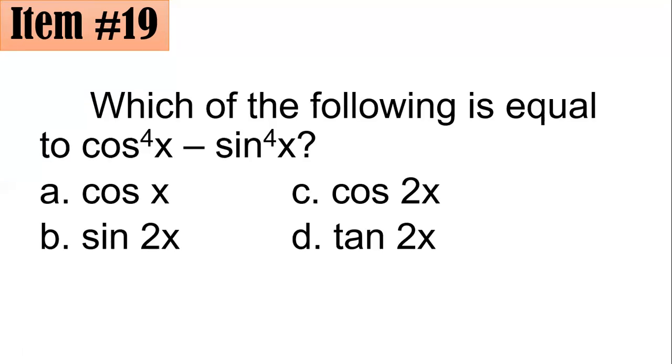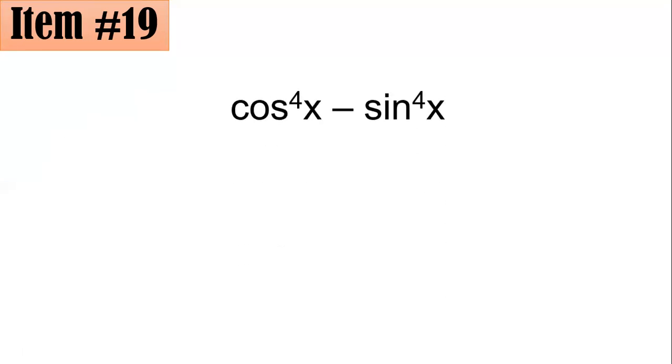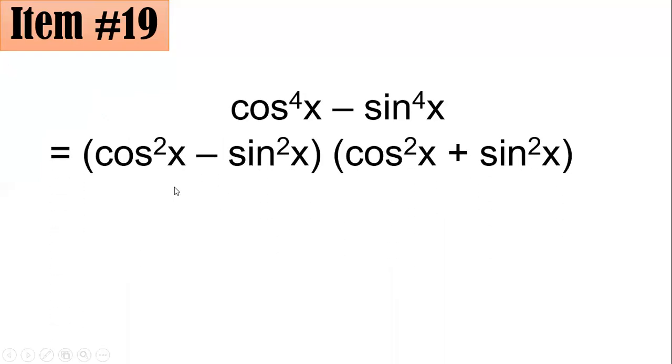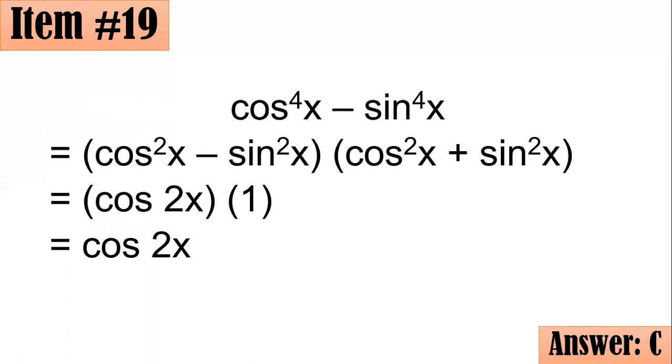So this is a difference of two squares. And this is factorable into this one. I believe you would agree with this. So we have cosine squared X minus sine squared X times the quantity cosine squared X plus sine squared X. So you see, even though it is trigonometry, still the laws of algebra apply. And from here, we know that cosine squared X minus sine squared X is in fact an identity equal to cosine 2X. Also, cosine squared X plus sine squared X is another trigonometric identity, which is equal to 1. And the product of these two is cosine 2X. So if you answered letter C, great job.